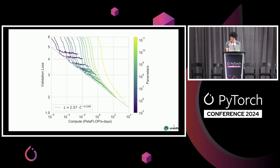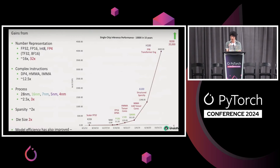So the famous plot — everyone knows this image, right? The scaling laws: the more you train, the lower the loss. The question is how do we make this process faster? GPUs are getting faster and faster, there are more transistors, but it's not actually the GPUs themselves getting faster — there are actually methods behind them that make it faster.